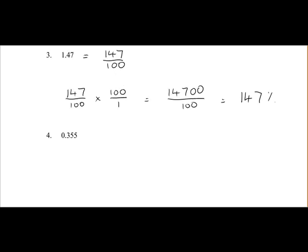Finally, with 0.355, there's three places after the decimal point. So when we convert it to a fraction, it's 355 over 1,000.